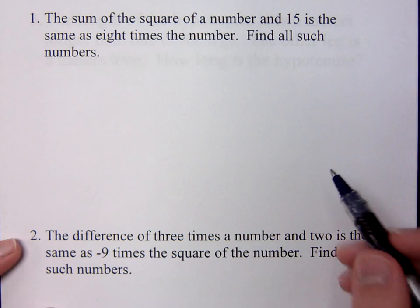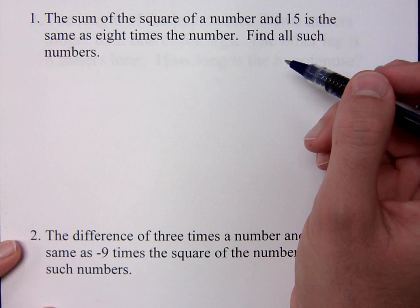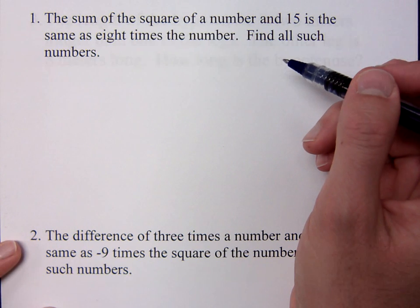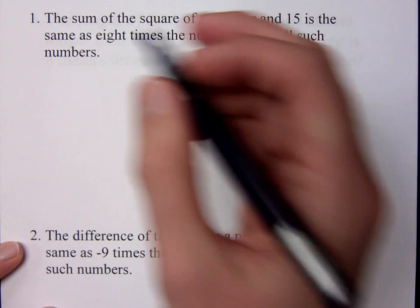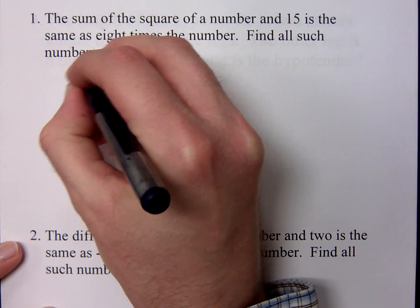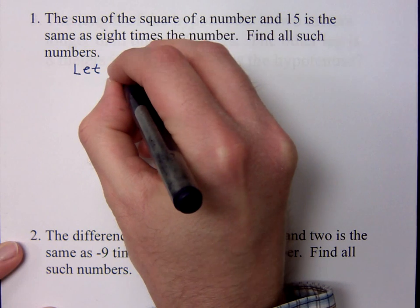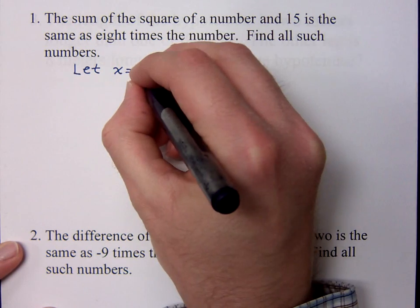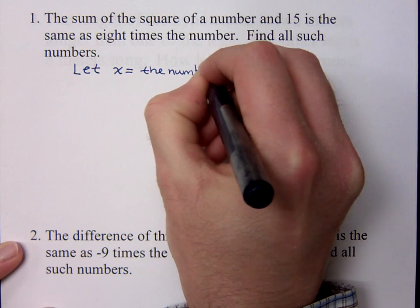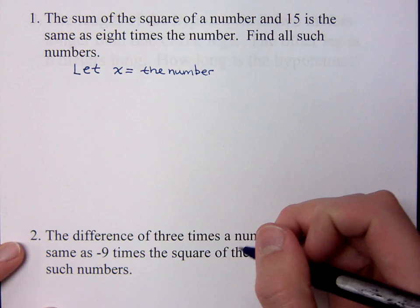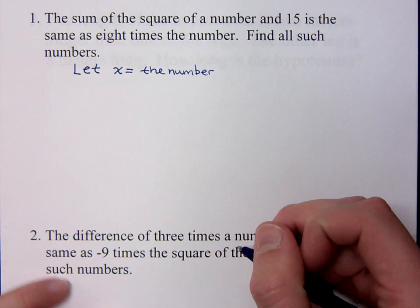But really, before you even get started on that, you've got to read the problem, make sure you understand what's going on here. So the sum of the square of a number and 15 is the same as eight times the number. Find all such numbers. Now, we did a problem like this the other day. And for these guys, we still have to follow those rules that we have for solving word problems. So the first thing is to define my variable. In this case, I want to let x equal the number. I don't know what the number is. That's my variable. That's my unknown. So that's how I'm going to define my variable.